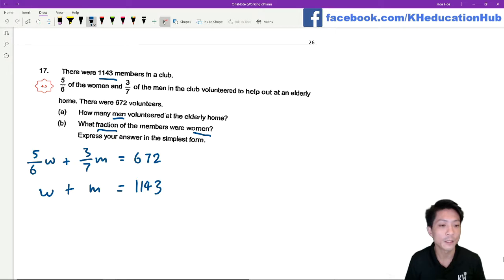We're going to find the number of women first from here. I'm going to divide everything by 3. You're going to need a bit of help with your calculator. 5 over 6 divided by 3.